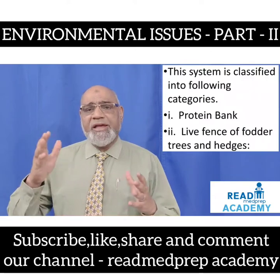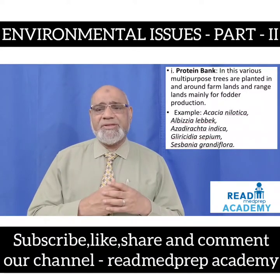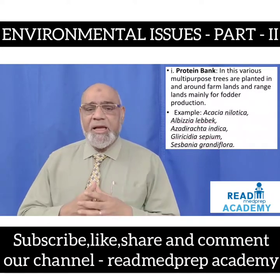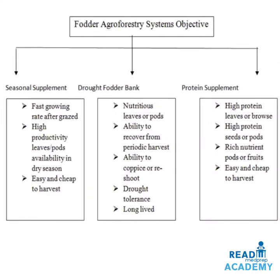The two categories are: protein bank or live fence of fodder trees and hedges. In the protein bank, various multipurpose trees are planted in and around the farmlands and rangelands mainly for fodder production. Examples include Acacia nilotica, Albizia lebbeck, Azadirachta indica, Gliricidia sepium, and Sesbania grandiflora. Main fodder agroforestry system objectives include providing seasonal supplement, fast growing rate after being grazed, high productivity of leaves and pods, availability in dry season, and easy and cheap to harvest. Drought fodder bank could produce nutritious leaves or pods, with ability to recover from periodic harvest, ability to coppice or reshoot, drought tolerance, and long-lived plants.